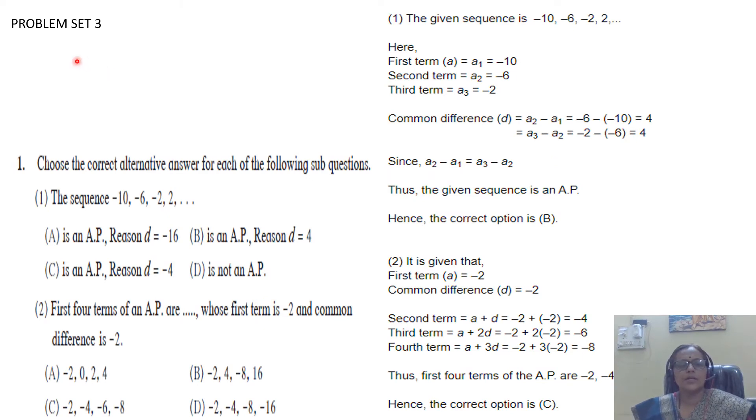Let us start with Arithmetic Progression Problem Set 3. Multiple choice questions - choose the correct alternative answer for each of the following sub-questions. The sequence is given: -10, -6, -2, 2, and so on. Select the correct alternative. The options are: this is an AP with common difference -16, this is an AP with common difference -4, this is an AP with common difference 4, or it is not an arithmetic progression.